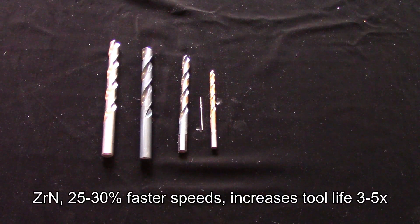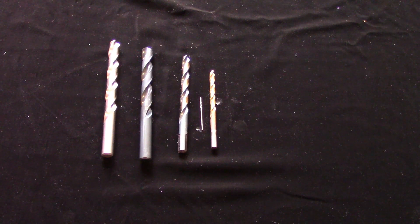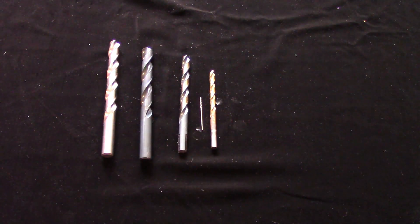Then there's zirconium nitride, which is very bright yellow in color. And this is an excellent choice for aluminum, because aluminum doesn't want to stick to it for one reason or another. And it's got similar cutting characteristics to titanium nitride.